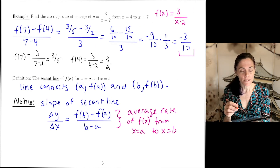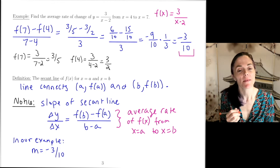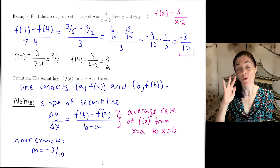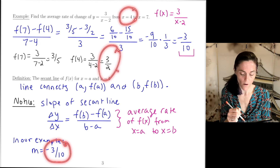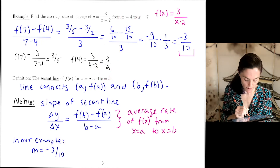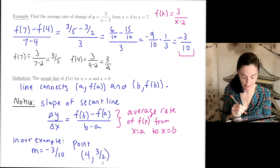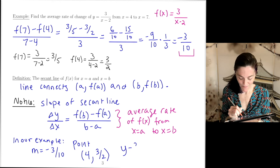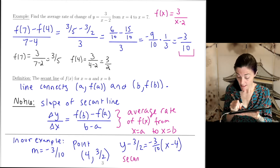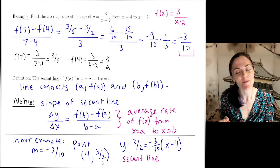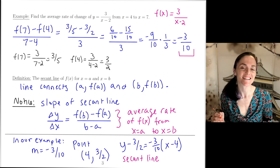Returning to the example y = 3/(x − 2): we have the slope of the secant line, which is −3/10. To find the equation of the secant line, we can use either point — let's use (4, f(4)) = (4, 3/2). Using point-slope form: y − y₁ = m(x − x₁), we get the equation of the secant line.